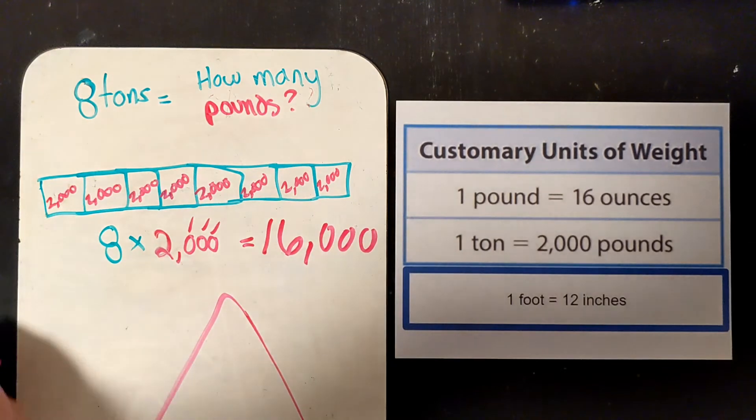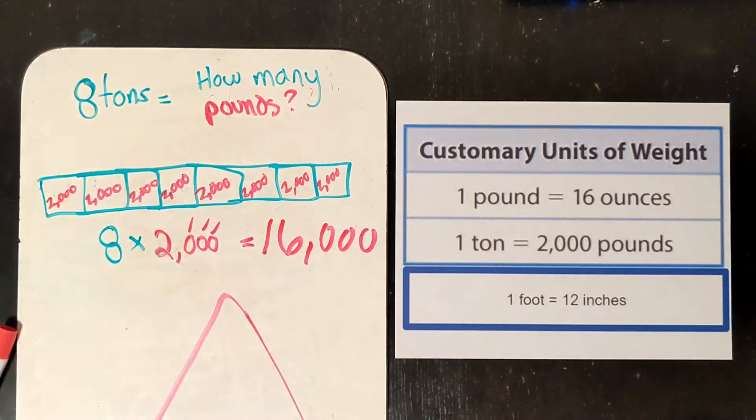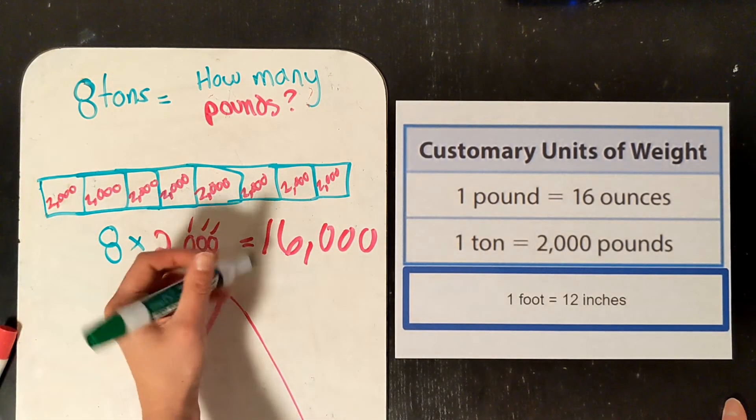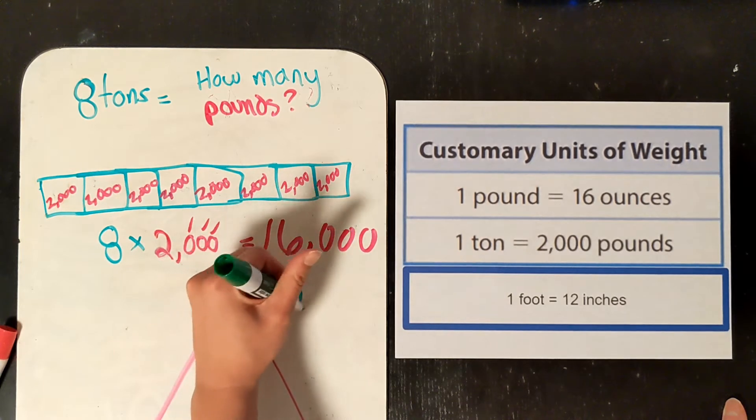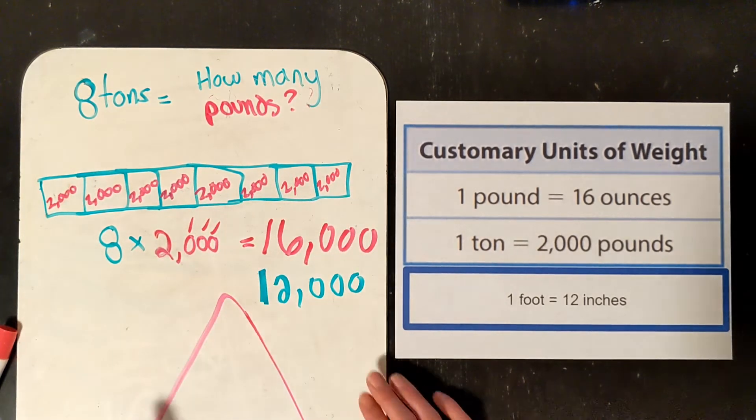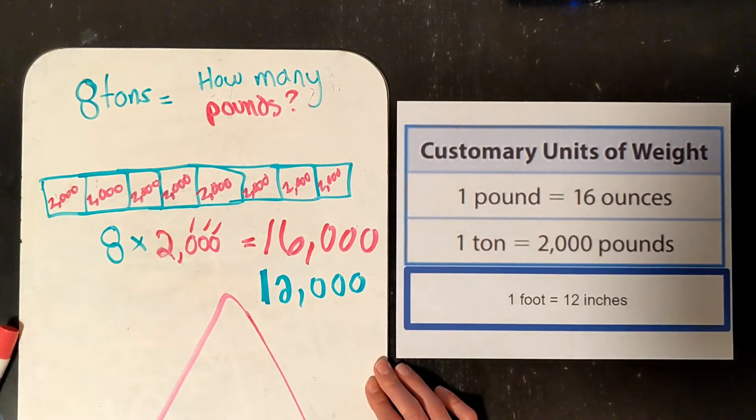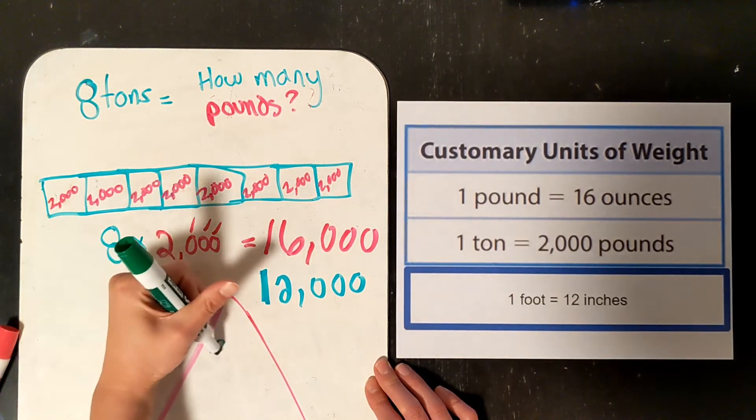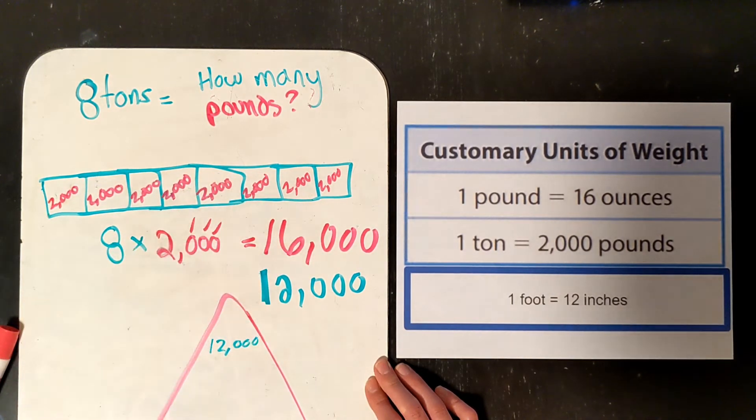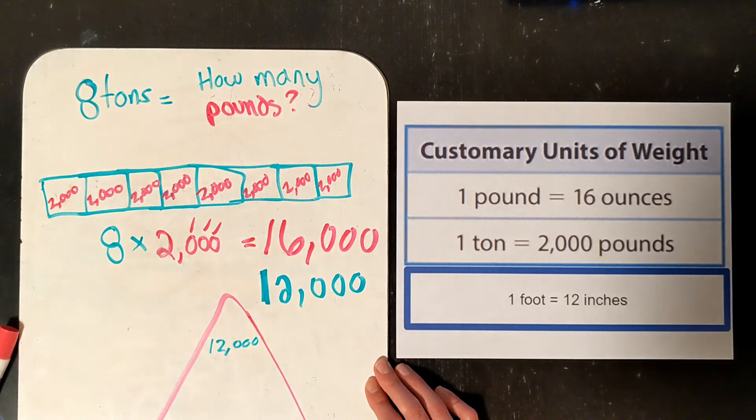So that is 16,000. That's how many pounds are in 8 tons. Just to give you some reference, the average elephant weighs about 12,000 pounds. So that's 6 tons. So the average elephant weighs about 12,000 pounds.